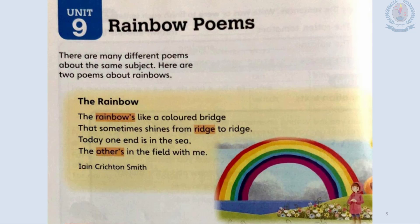The poem is by Ian Christian Smith. Let's look at the first line: 'The rainbow's like a colored bridge.' Here the poet compares the rainbow to a colorful bridge. There are seven colors in the rainbow: red, orange, yellow, green, blue, indigo and violet. In the picture you can see this colorful rainbow looks like a colored bridge.